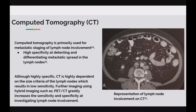Computed tomography is primarily used for metastatic staging of lymph node involvement. It demonstrates high specificity at detecting and differentiating metastatic spread in the lymph nodes. Figure 3 demonstrates a representation of lymph node involvement seen on a CT. Although highly specific, CT is highly dependent on the size criteria of the lymph nodes, which results in low sensitivity. Further imaging using hybrid imaging such as PET-CT greatly increases the sensitivity and specificity at investigating lymph node involvement.